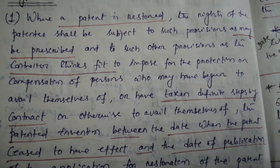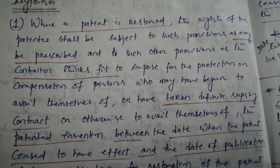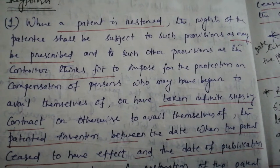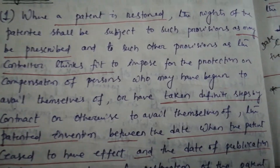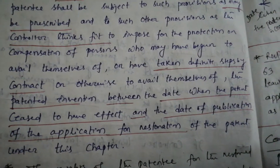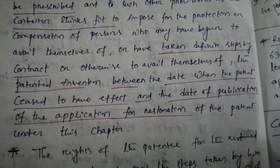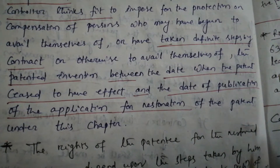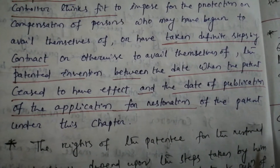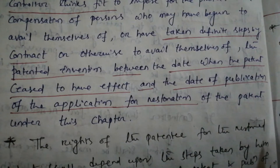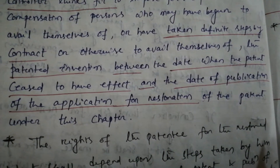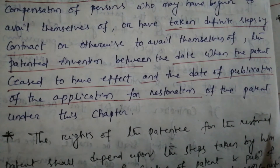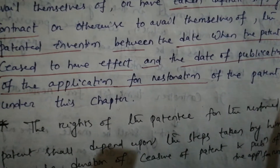Subsection 1: Where a patent is restored, the rights of the patentee shall be subject to such provisions as may be prescribed and to such other provisions as the controller thinks fit to impose for the protection or compensation of persons who may have begun to avail themselves, or have taken definite steps by contract or otherwise to avail themselves of the patented invention between the date when the patent ceased to have effect and the date of publication of the application for restoration of the patent under this chapter.